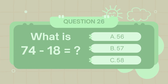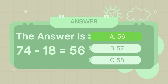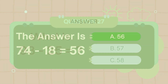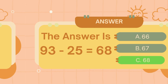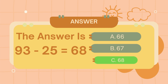What is seventy-four minus eighteen? The answer is fifty-six. What is ninety-three minus twenty-five? The answer is sixty-eight.